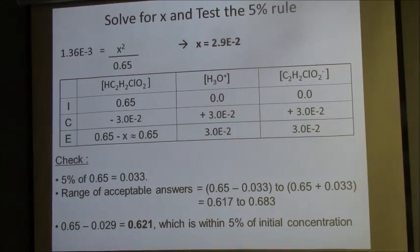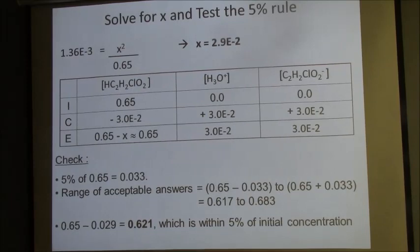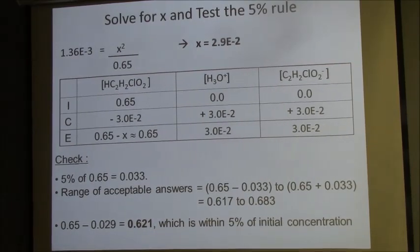If you come up with an answer that's outside that range, you're in trouble. But I'm just going to tell you right now: 99 times out of 100, if K is less than 1, you're perfectly fine to make the 5% approximation.